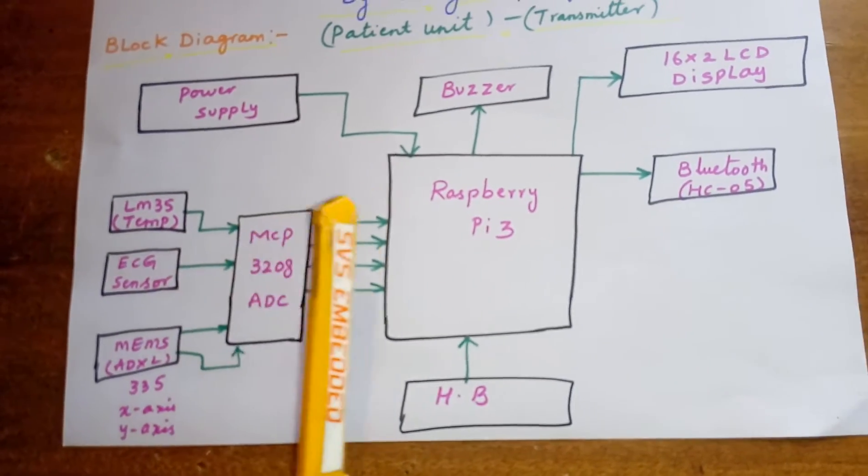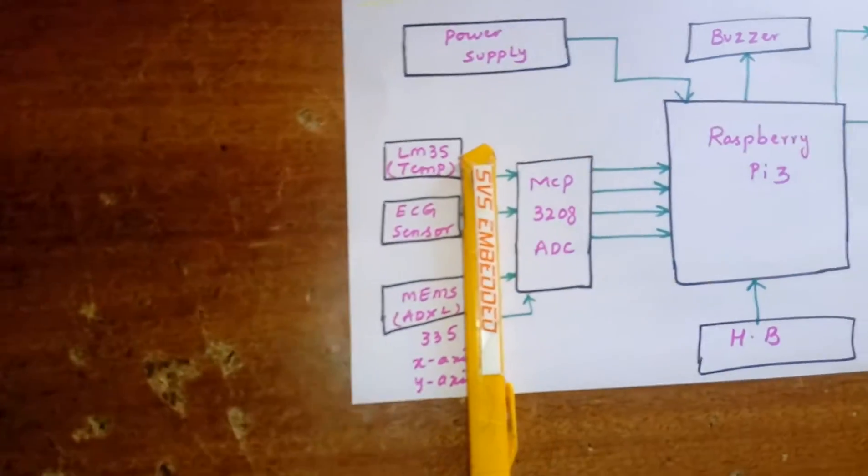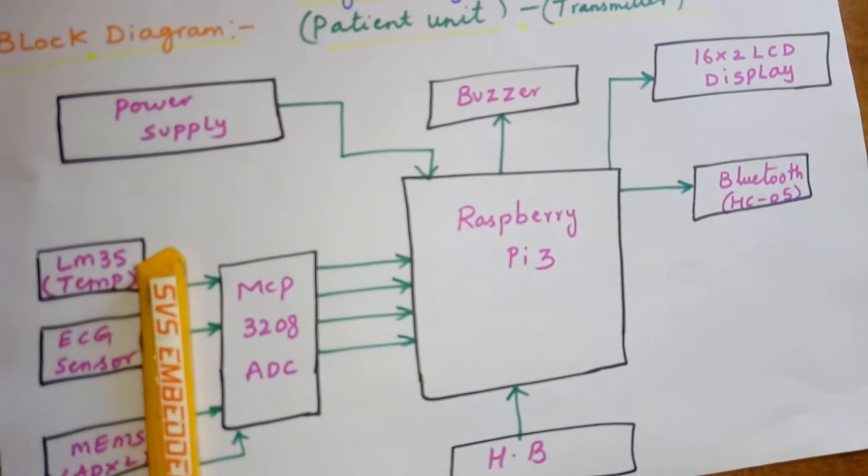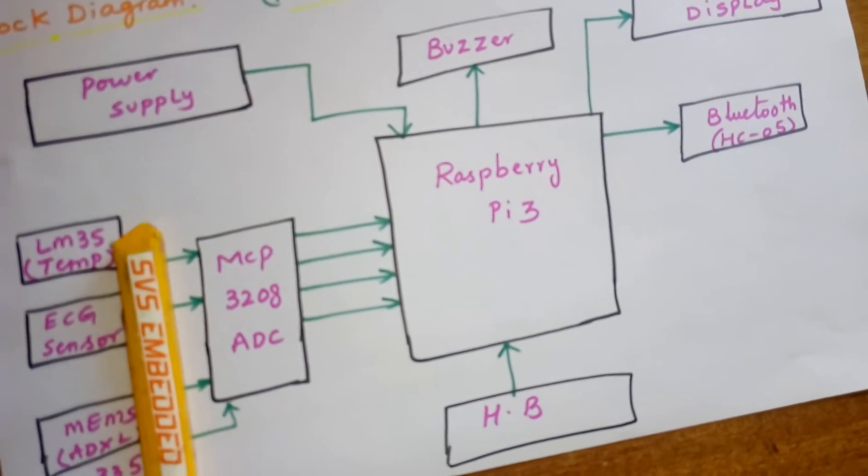These are analog sensors and this is a digital sensor. Whatever analog sensor data is coming will be displayed on the LCD. We are going to trigger the buzzer if anything happens, and that data should be displayed on the LCD. We are going to display data onto the LabVIEW.